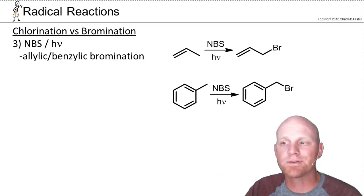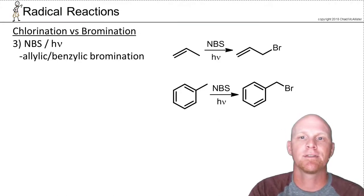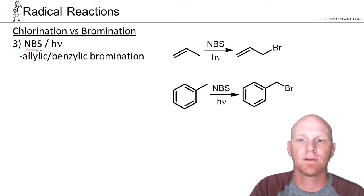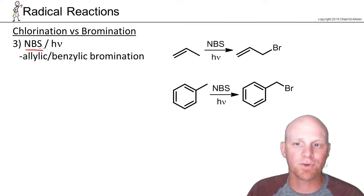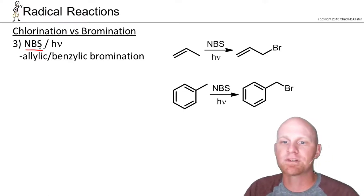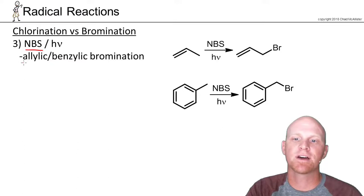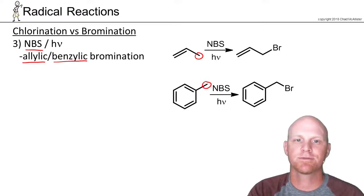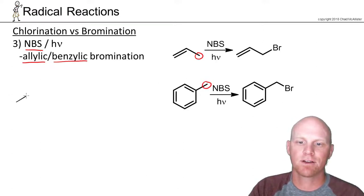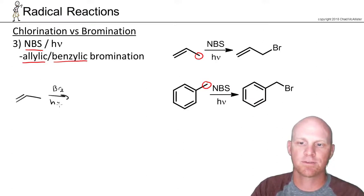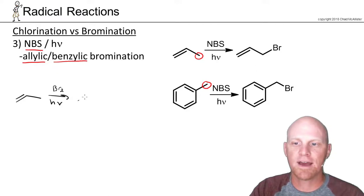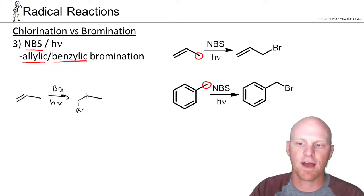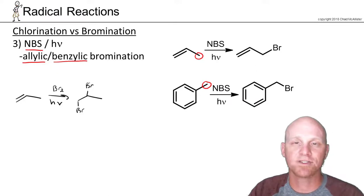The third reagent we'll use in free radical halogenation is a little special — NBS, which stands for N-bromosuccinimide. We'll see its structure a bit later. We specifically use NBS to brominate allylically or benzylically — either one carbon away from an alkene or one carbon away from a benzene. If you tried to brominate allylically using plain Br2 and light, you might have an alkene addition reaction competing, which adds across the alkene instead.